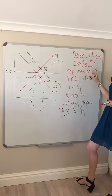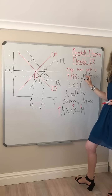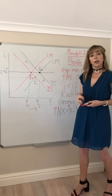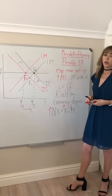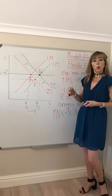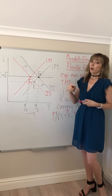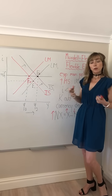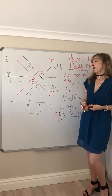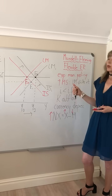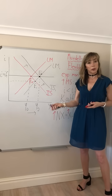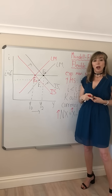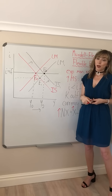So under a flexible exchange rate system, monetary policy is highly effective, and fiscal policy is ineffective. This is the total opposite of what we saw under a fixed exchange rate system, where monetary policy was ineffective and fiscal policy was highly effective. This points to the trade-off that occurs as a result of having free capital mobility: if you're operating a fixed exchange rate system, you have to forego monetary autonomy.